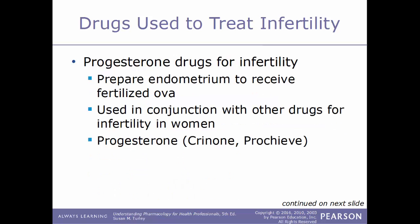Progesterone drugs are also used to treat infertility. They act by helping prepare the endometrium to receive a fertilized ovum and are used in conjunction with other infertility drugs. Progesterone is sold under the trade names Crinone and Prochieve.